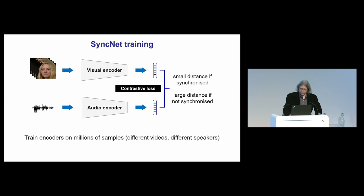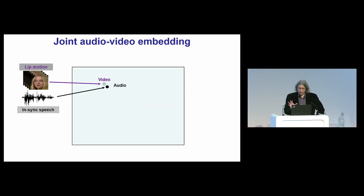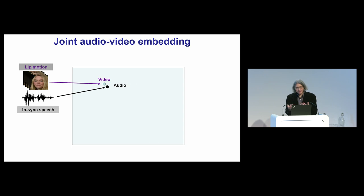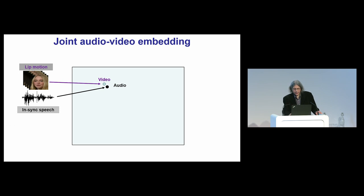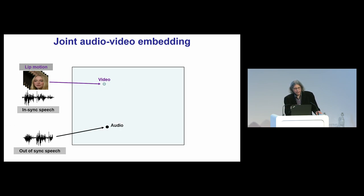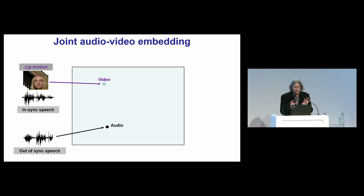Now imagine we've trained this network on millions of examples. What we'll end up with is called an embedding space where these vectors live. When we have a synchronised signal, the vectors produced by the video encoder and the audio encoder are close together. If they're not synchronised, they won't be close. That's what we've learned. Once we've done this, what can we use it for?